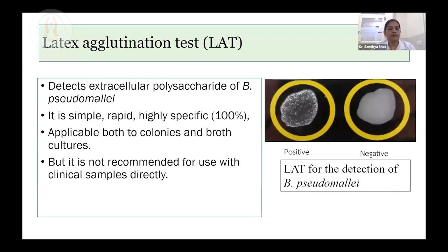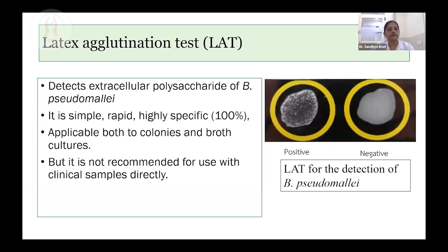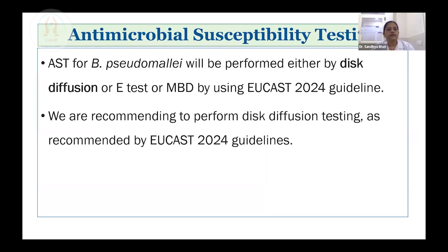Apart from the InBios kit, there is also a latex agglutination test card available. Detection is based on capsular polysaccharide antigens of Burkholderia pseudomallei. This is also a simple, rapid, and highly specific test, which can be performed on colonies as well as positive blood culture broth. This is the method of isolation and identification of Burkholderia pseudomallei — simple, like any other gram-negative isolate. No special media is required for isolation. We strongly recommend all centers use the Vitek gram-negative ID card for identification.